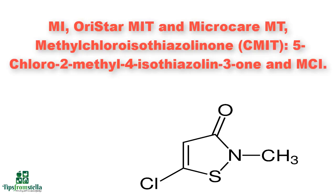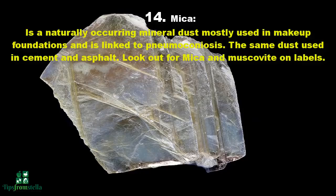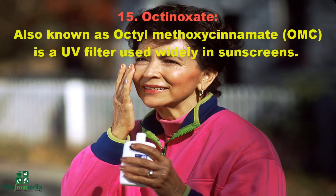Also look for methylchloroisothiazolinone (CMIT), 5-chloro-2-methylisothiazolinone-3(2H)-one, and MCI on labels. Number fourteen: mica. This is a naturally occurring mineral dust mostly used in makeup foundations and is linked to pneumoconiosis — the same dust used in cement and asphalt. Look out for mica and muscovite on labels.